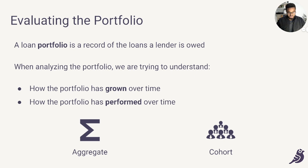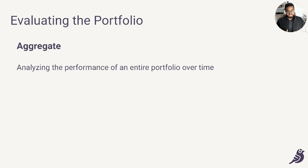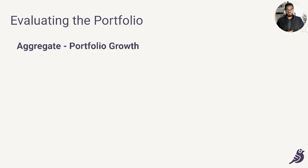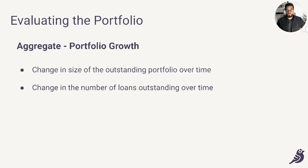Let's start with analyzing the portfolio on an aggregate basis. Here we're looking at the performance of the entire portfolio over time. To answer the question of portfolio growth, we're looking to understand one, how the size of the outstanding portfolio has changed over time, and two, how the number of loans outstanding have changed over time. The best way to understand this is to get data from the company containing the outstanding loan portfolio size as well as the number of loans outstanding over time. With this data, we typically create charts.